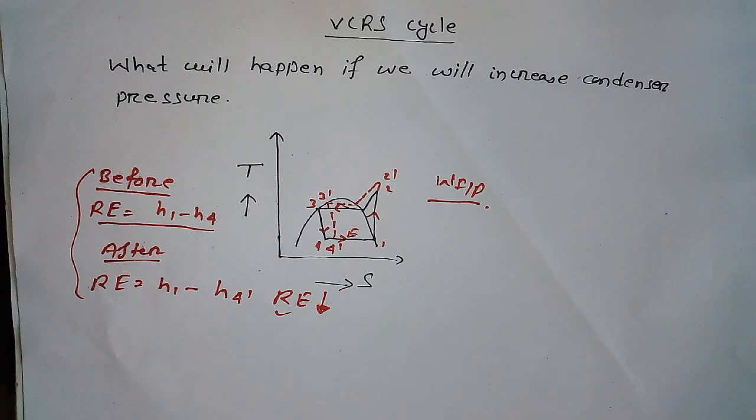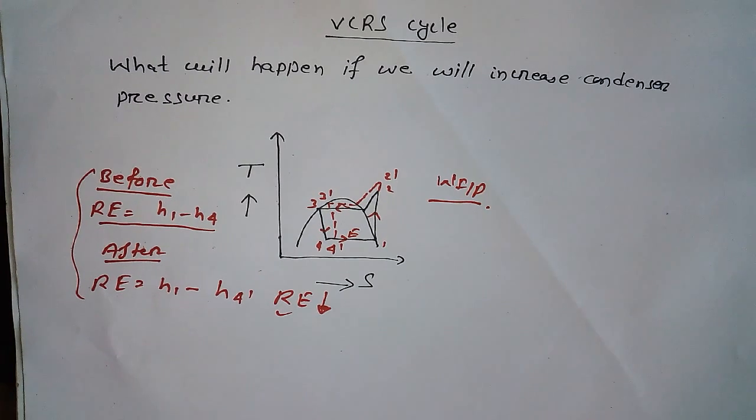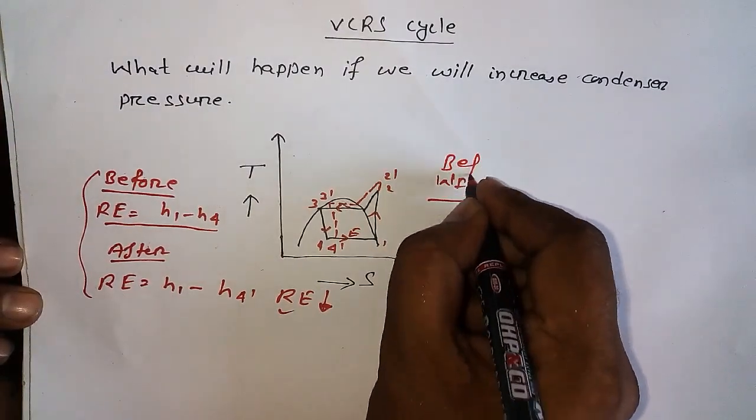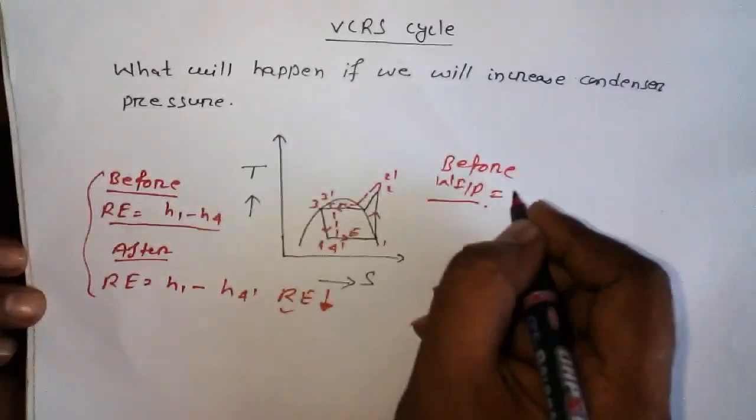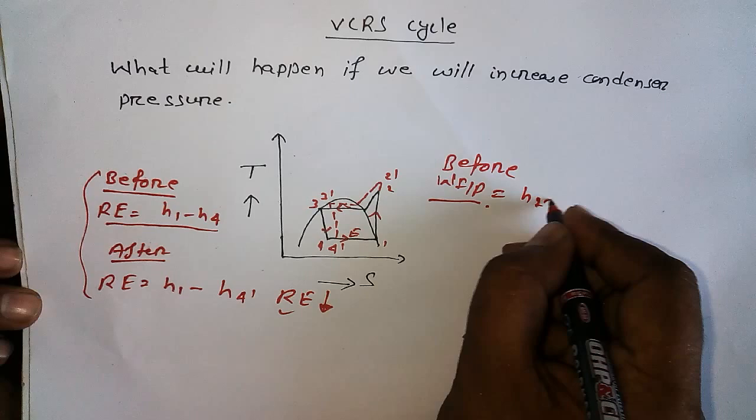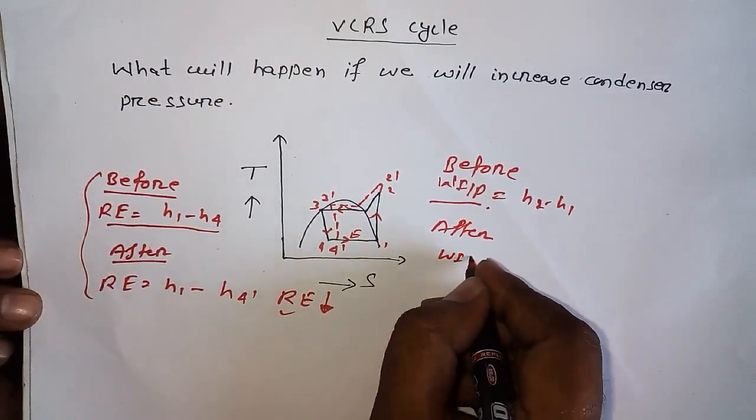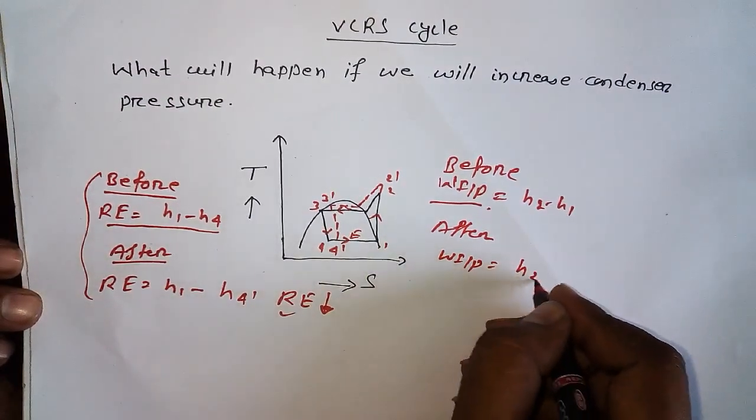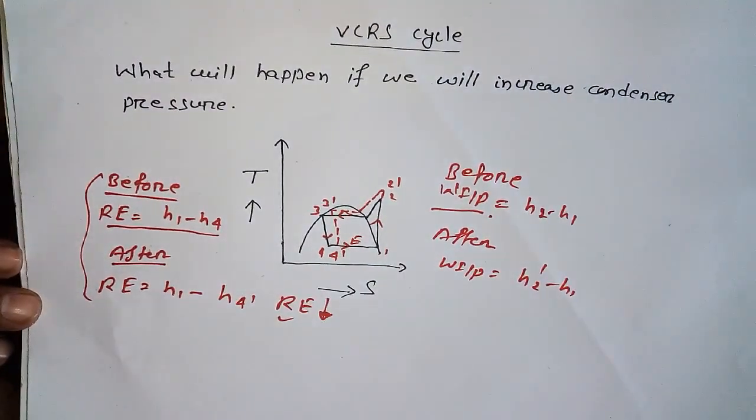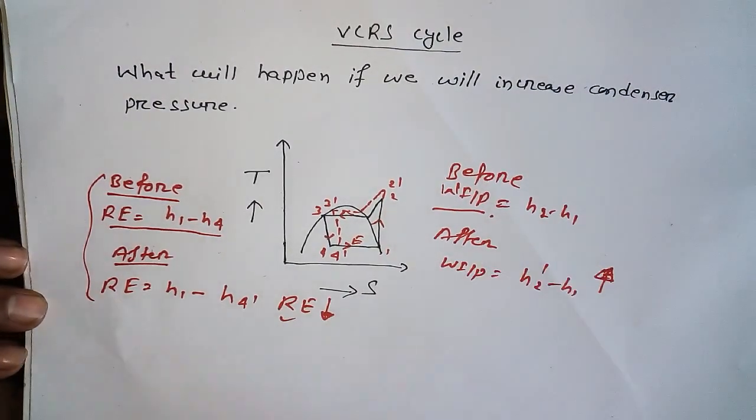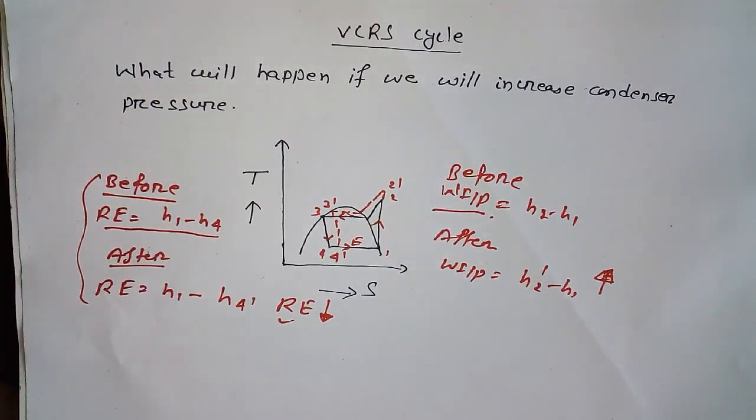What will happen to work input? This is important. Before increasing condenser pressure, work input = h2 - h1. After increasing, work input = h2' - h1. That means work input is increasing.